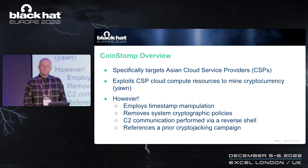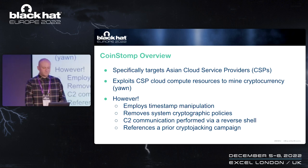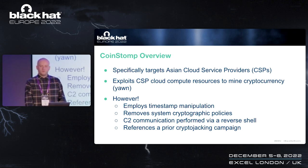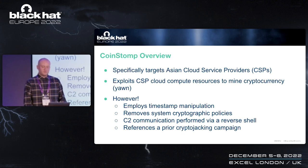With CoinStomp, we noticed interesting techniques hinting at the attacker's awareness of cloud security measures and the incident response process. These included the use of timestamp manipulation — timestomping — an attempt to remove system cryptographic policies to weaken the target system, C2 communication via a reverse shell, and a reference to a prior cryptojacking campaign, potentially in an attempt to foil attribution.